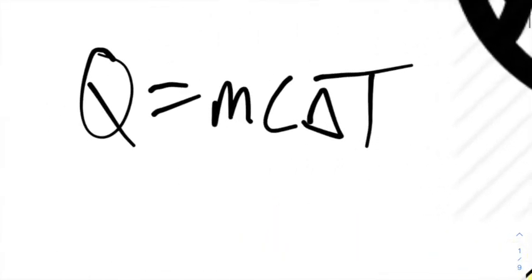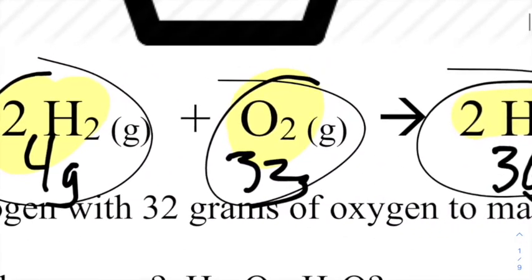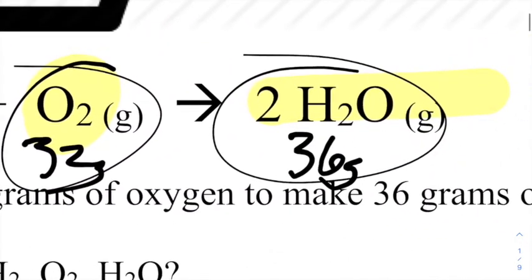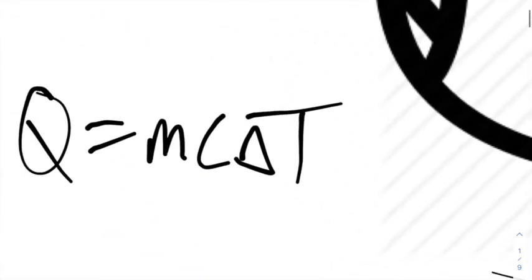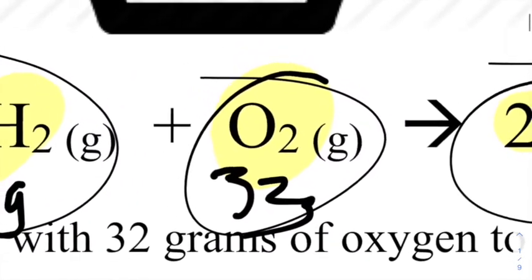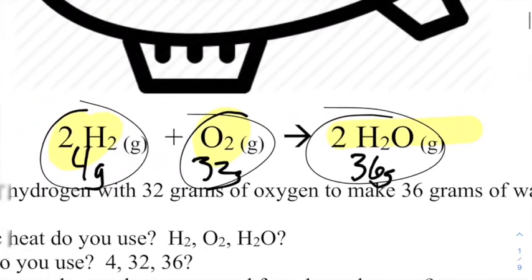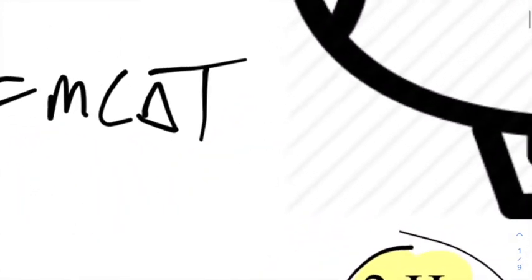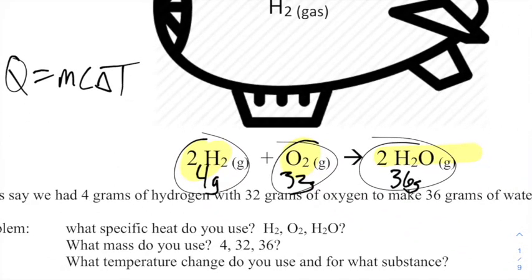Which mass do I use in q = mcΔT? Do I use the 4 grams? Do I use the 32? Do I combine them to make 36? Which specific heat do I use — the specific heat of hydrogen, the oxygen, or the steam? The answer is: you can't. You can't use q = mcΔT for any of these processes because we have reached the limits of q = mcΔT and q = mL.